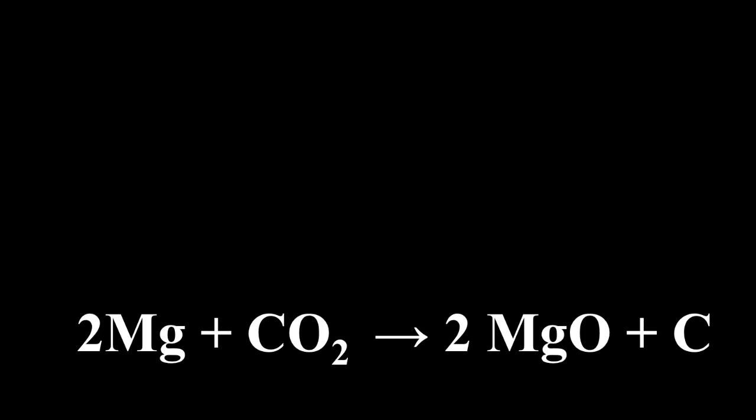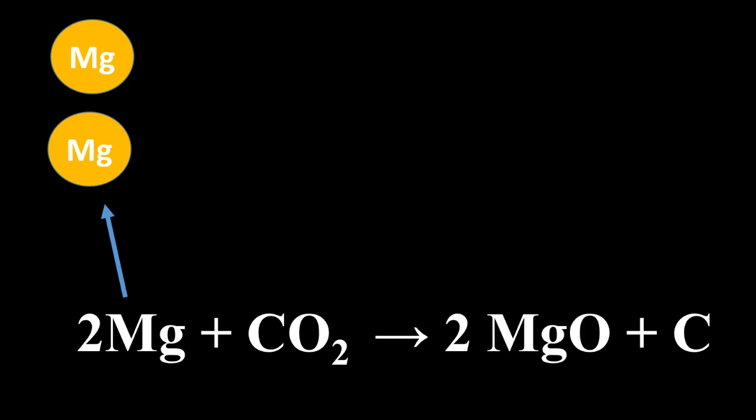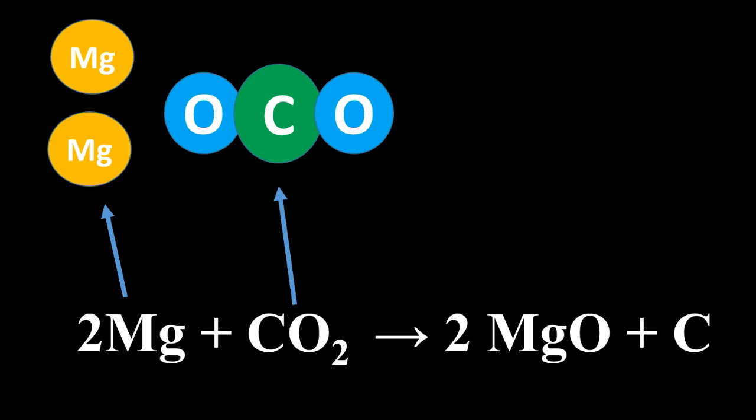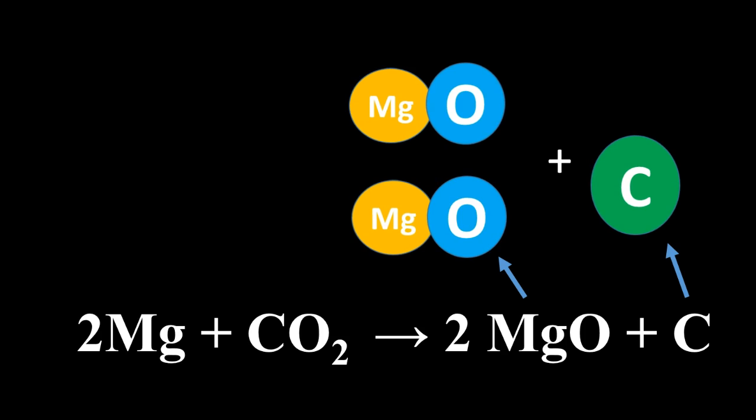In this chemical reaction, we have magnesium atoms being rearranged with a molecule of carbon dioxide, and those atoms now make a chemical called magnesium oxide plus carbon.